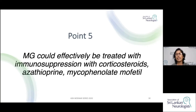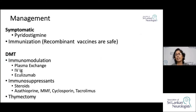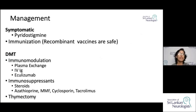In Myasthenia Gravis, patients need long-term immunosuppression. You treat them for symptoms and simultaneously start disease-modifying treatment. Immunosuppressants commenced as DMT should be given long-term to keep symptoms under control. Initially for symptomatic management, you can give anticholinesterase inhibitors. There are also recommendations regarding immunization, since live inactivated virus vaccines should be used cautiously in patients on immunosuppressants.